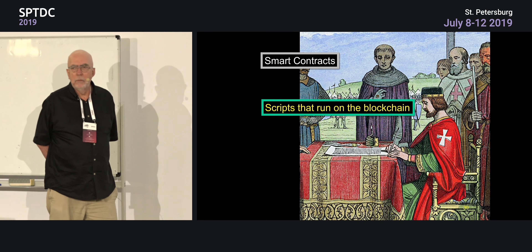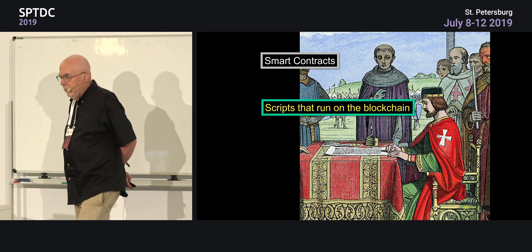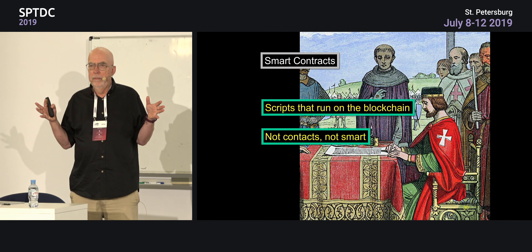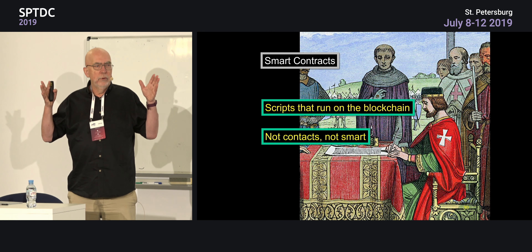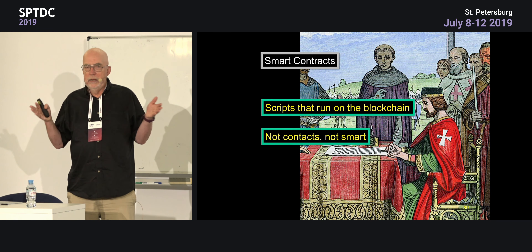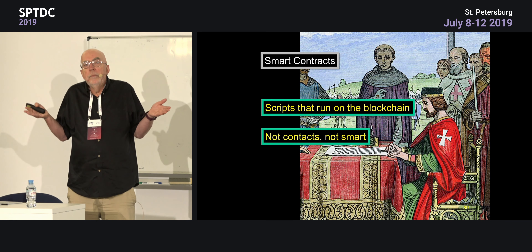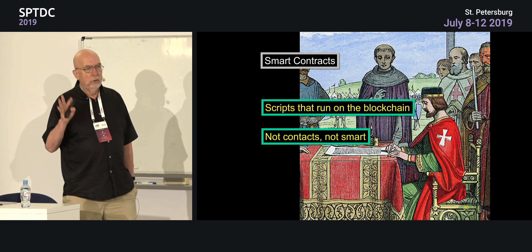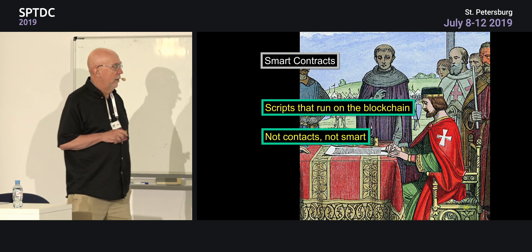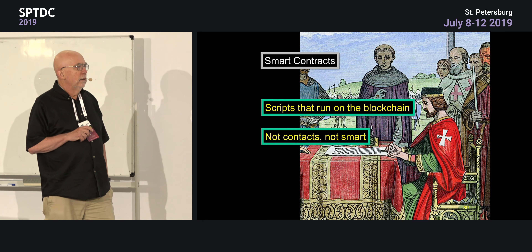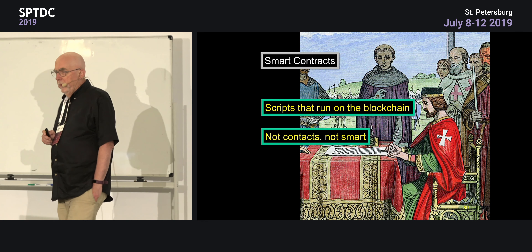A smart contract is a script that runs on the blockchain. The first thing to explain is that smart contracts are not contracts, and they're not really smart. Calling it a smart contract was a brilliant marketing move because everybody remembers the name. If you called it shell scripts that run on a distributed blockchain, nobody would get excited about it. But there's nothing particularly smart or magical about this — it is a very interesting area where there's a lot of work that needs to be done to clean things up.